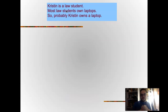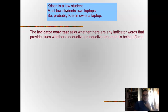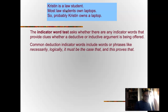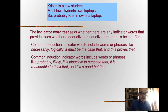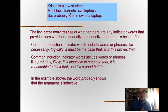Consider this example: Kristen is a law student, most law students own laptops, so Kristen probably owns a laptop. Is this inductive or deductive? The indicator word test asks whether there are any words that provide clues whether the argument is inductive or deductive. Common deductive indicator words include phrases like 'necessarily,' 'logically,' 'in the case that,' and 'this proves that.' None of those appear here. However, it includes the word 'probably' — words like 'probably,' 'likely,' 'plausibly,' and 'it is reasonable to think that' indicate an inductive argument. The word 'probably' shows that the argument is inductive, even if it is structured like a deductive argument.